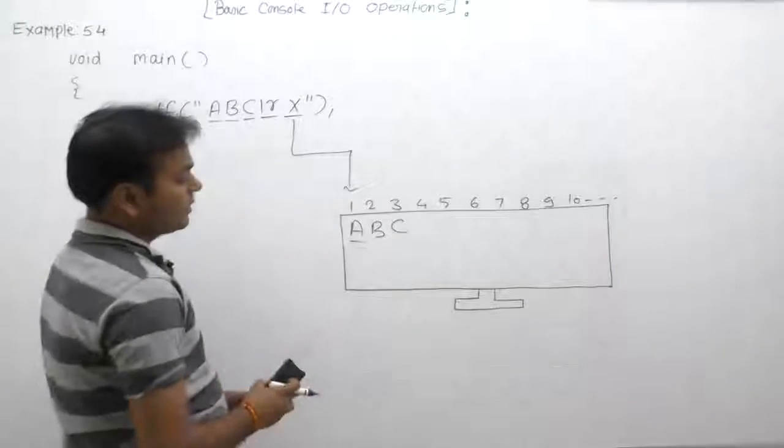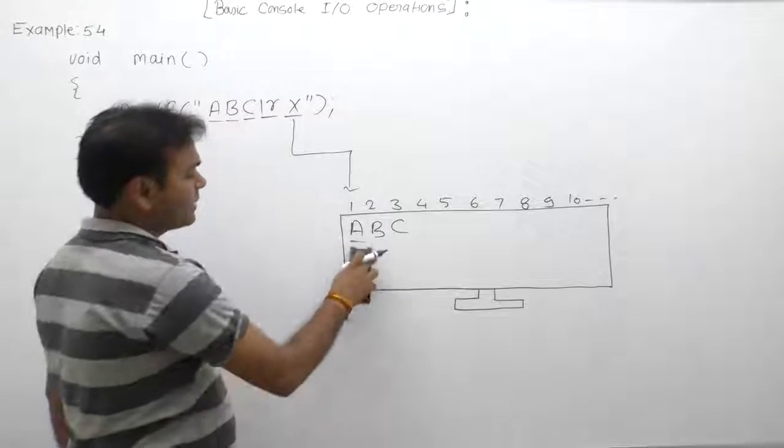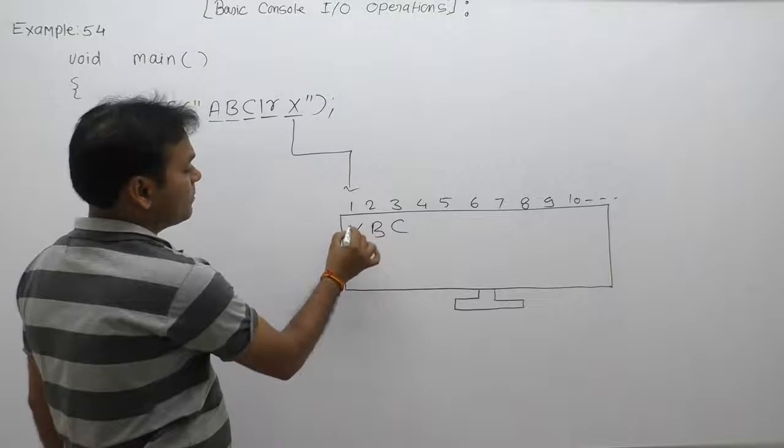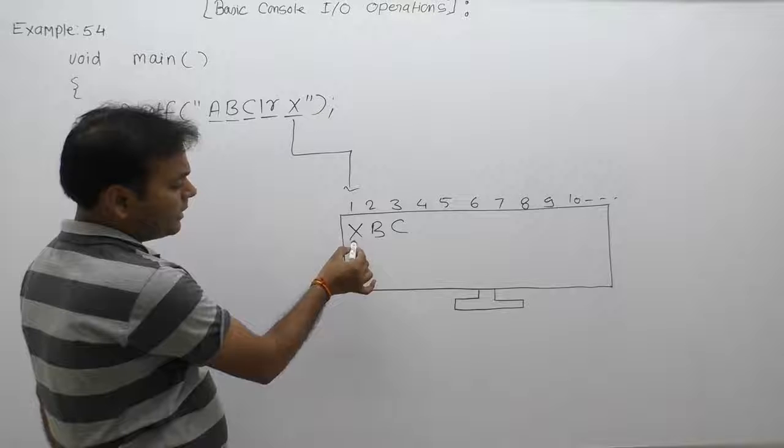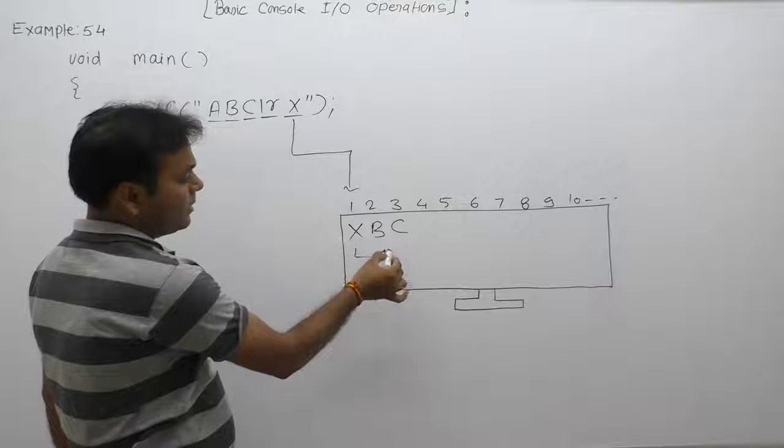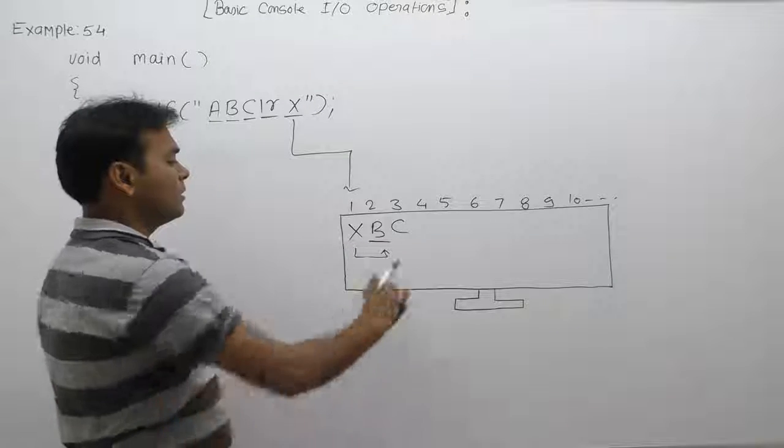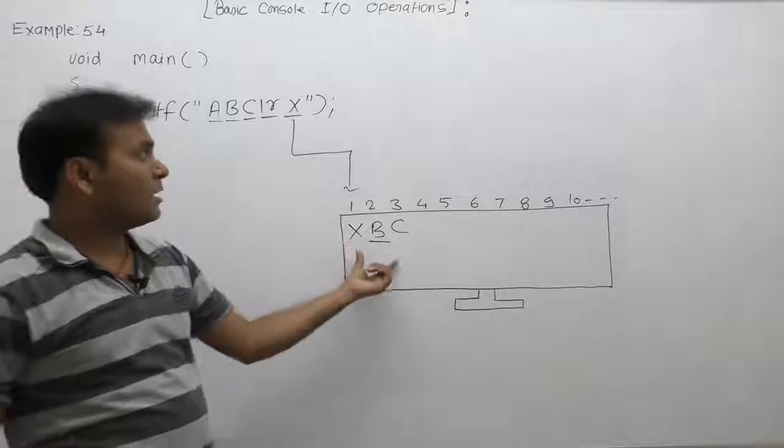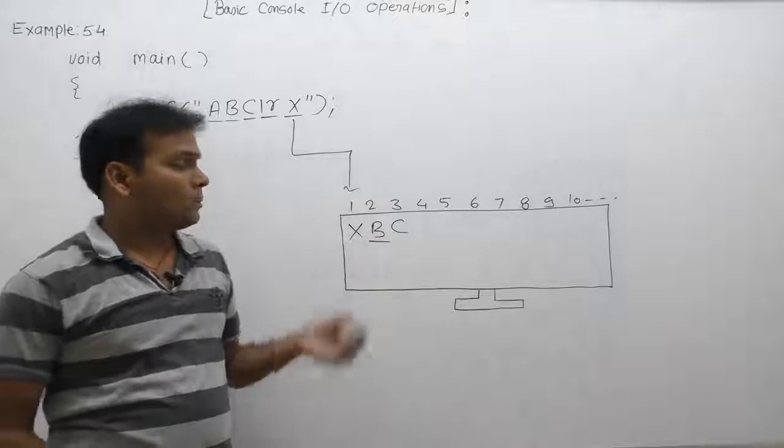Cursor will be pointing on the first position, therefore it will be replacing character A. A is replaced by X. And after printing X, cursor will be moved on the next position. Now cursor will be blinking on the character B. This is the final output given for the given print functions.